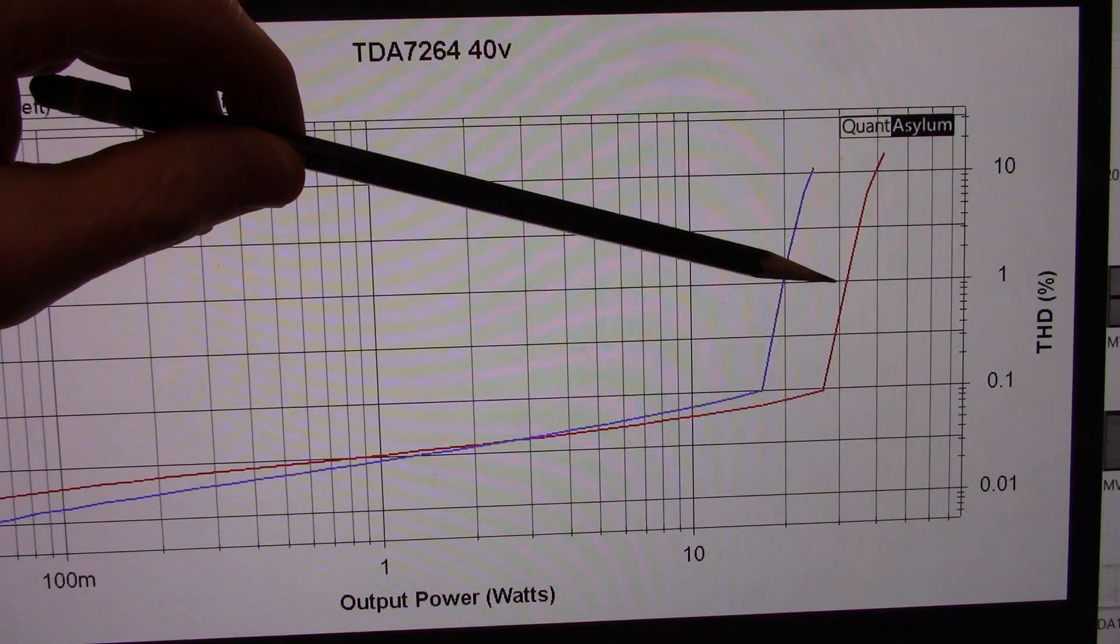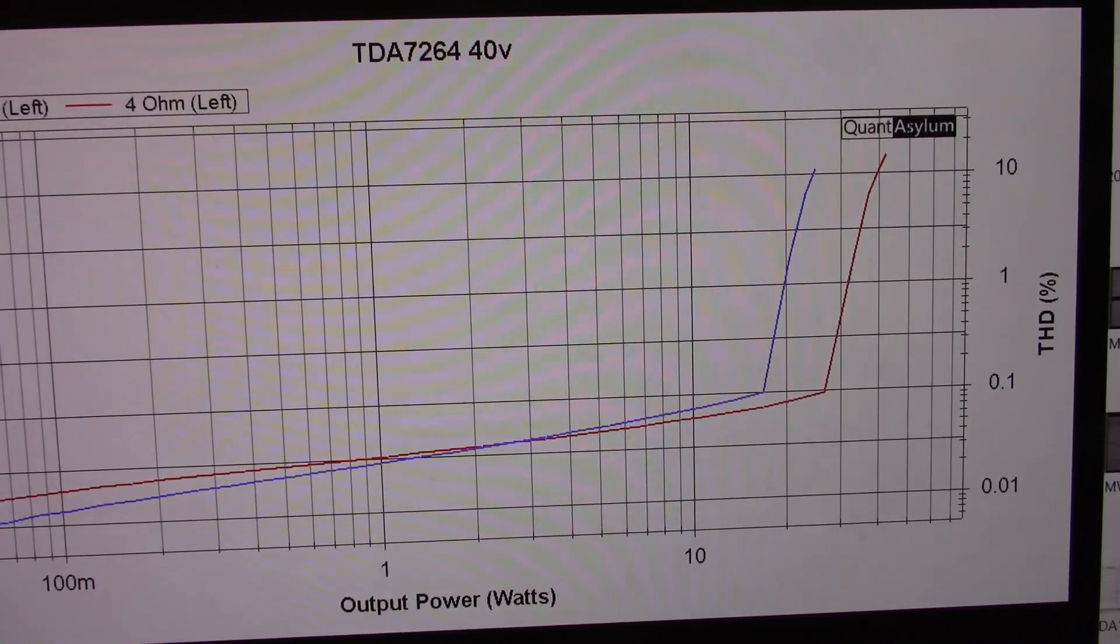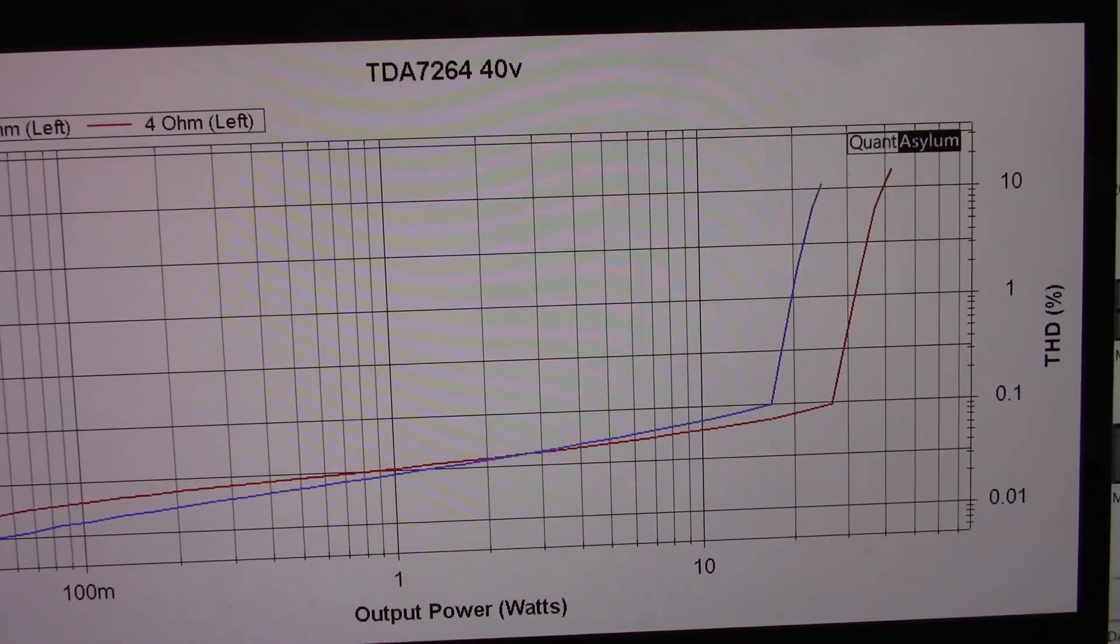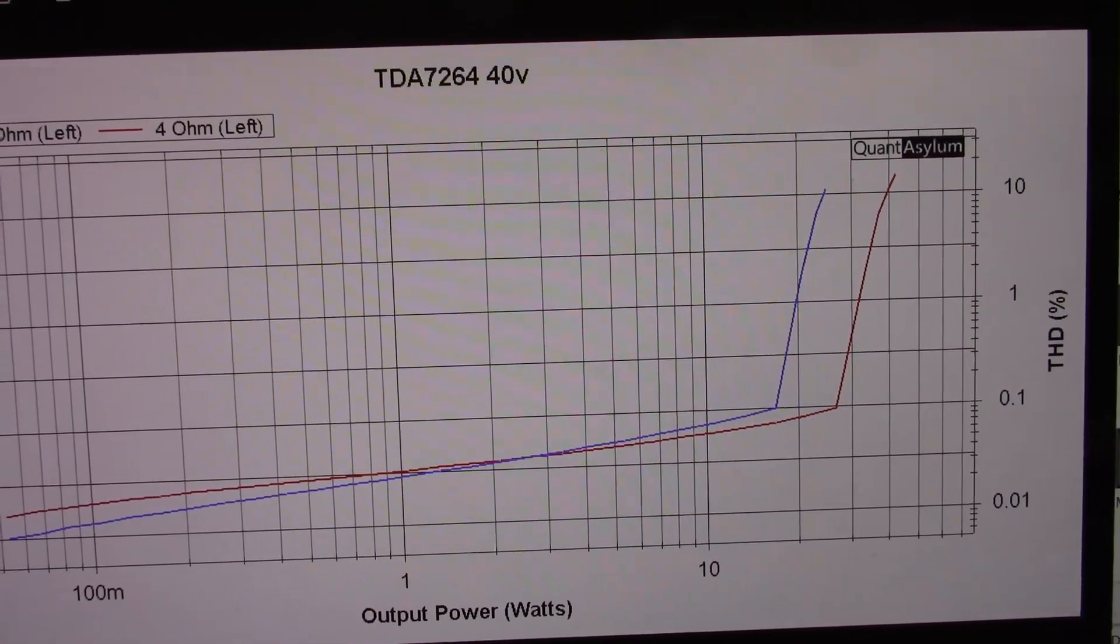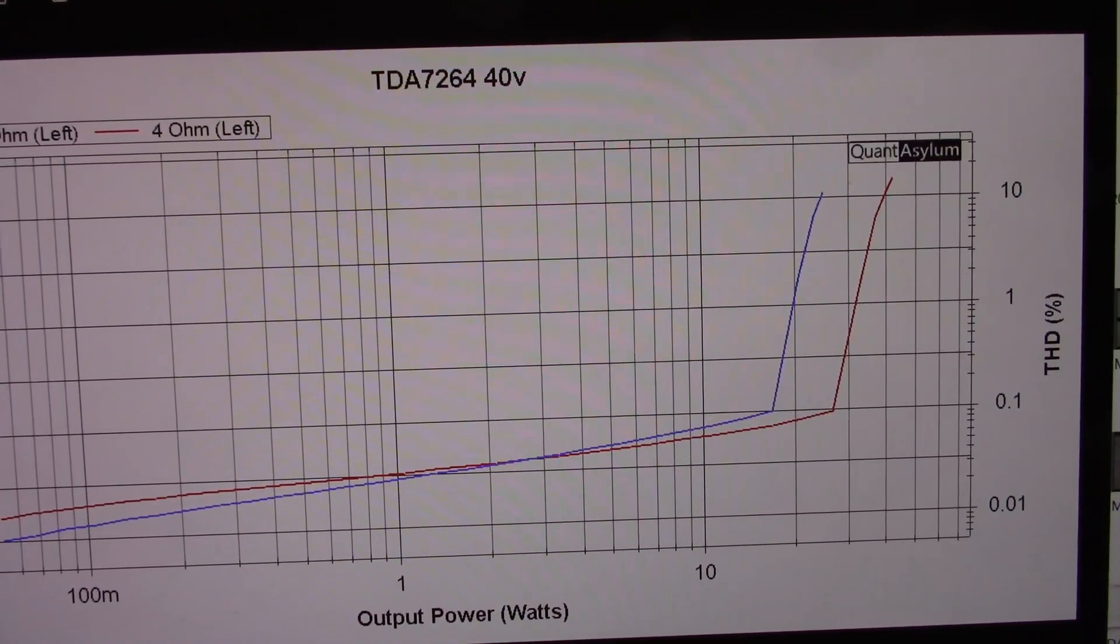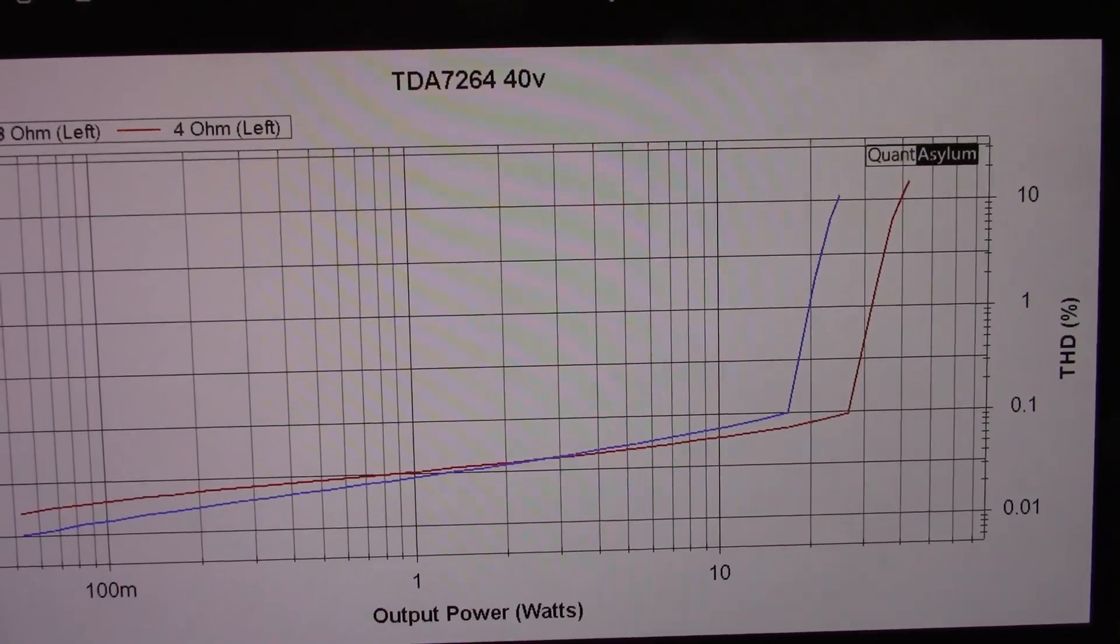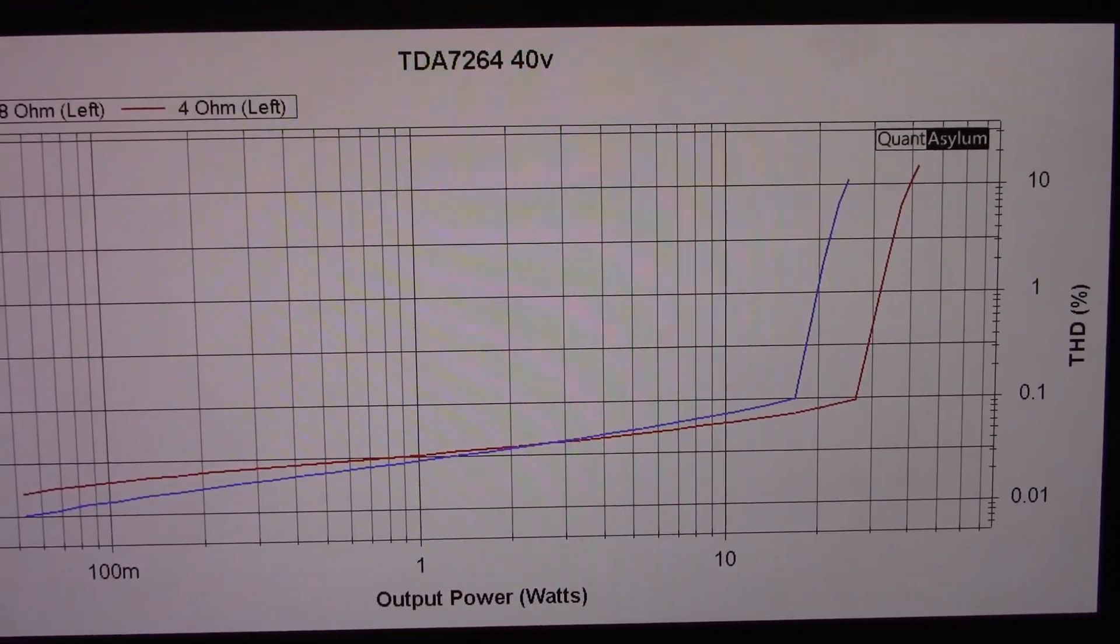That's just a bit over 30 watts, close to 31 watts. They call it a 25 watt per channel amplifier because they're looking at 10 percent, and I ignore 10 percent distortion ratings. That has no meaning to me.